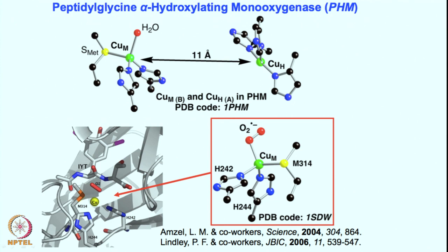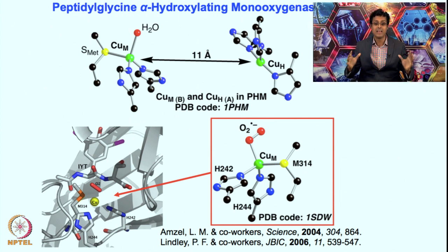Here there are two copper centers, yet the mononuclear copper-oxygen species forms at only one of them — nothing happens at the other in terms of copper-oxygen chemistry. As seen in this beautiful crystal structure of the starting material in the reduced form, reacting with oxygen gives rise to a mononuclear copper superoxo species. There is a debate in this field: even though this crystal structure is known, people believe that just like the tyrosinase peroxo/bis-μ-oxo debate, perhaps other species such as hydroperoxo or a mononuclear copper oxo species is the real active intermediate, but there is also enough proof in favor of the mononuclear copper superoxo.